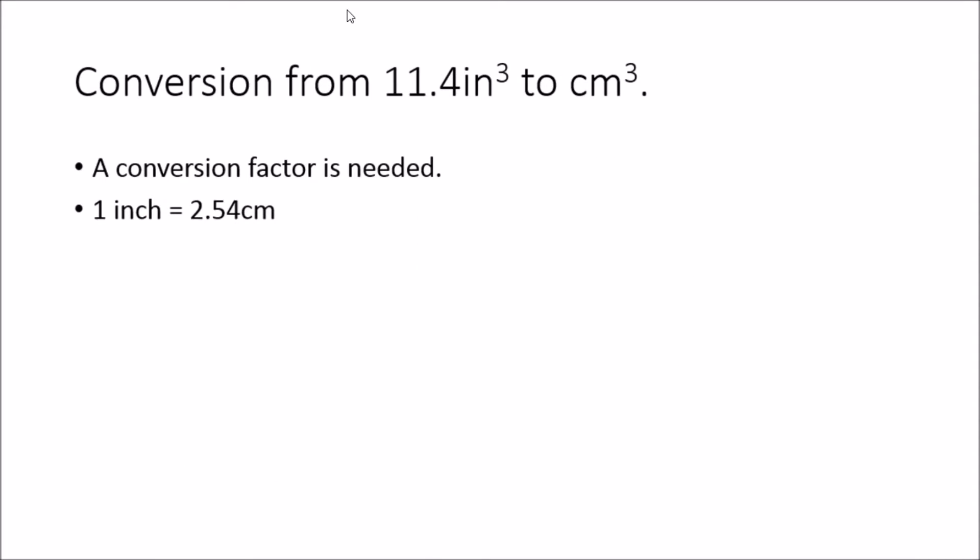So, what we're going to do is we're going to need to convert from 11.4 cubic inches to cubic centimeters, and that is going to require a conversion factor. And the conversion factor we're going to use is 1 inch is equal to 2.54 centimeters. So, if I was to set up my normal grid, and say that I've got 11.4 cubic inches, and say that 1 inch is equivalent to 2.54 centimeters, it's a good start, but it's not really the way to go.